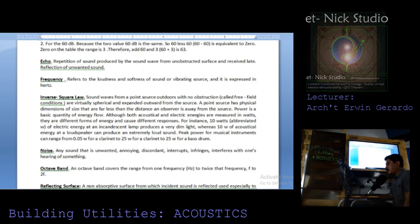For instance, 10 watts of electric energy at an incandescent lamp produces very dim light, whereas 10 watts of acoustical energy at a loudspeaker can produce extremely loud sound. Peak power for musical instruments can range from 0.05 watts for a clarinet to 25 watts for a bass drum.